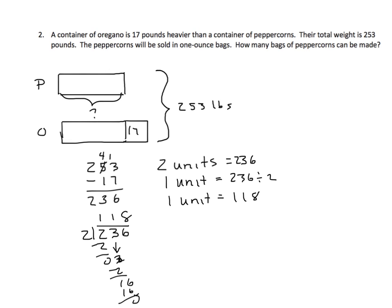But now we have to turn them into ounces, because they're telling us that they're sold in one ounce bags. How many bags of peppercorns can be made? So let's set this up in the way that we have been doing for the past couple of days. I have 118 pounds equals blank ounces, and that is the same as 118 pounds equals 118 times one pound. We'll put that in parentheses. Now we'll convert those pounds to ounces. How many ounces in a pound? That would be 16.